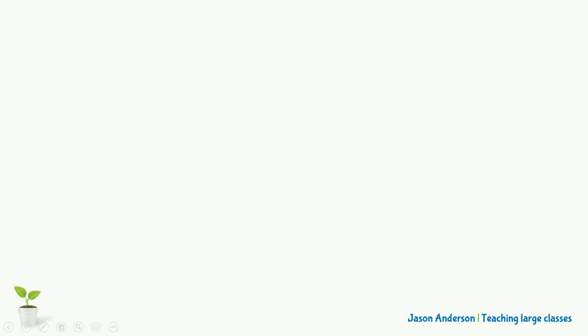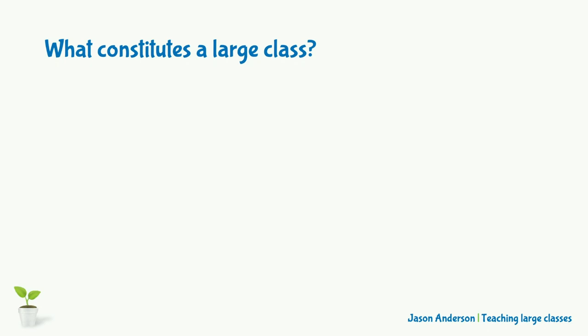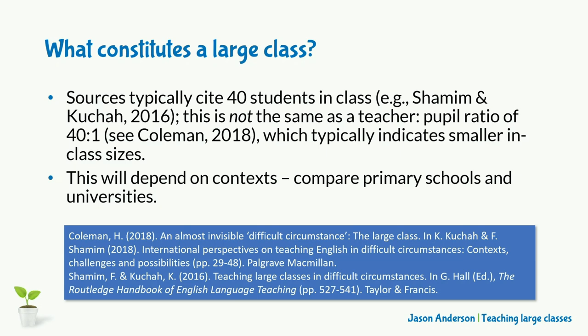Large classes are generally considered to be those with over 40 students, although definitions may need to be context specific. What is considered large in universities is very different to primary classrooms, for example.